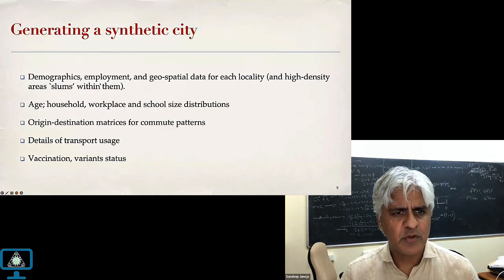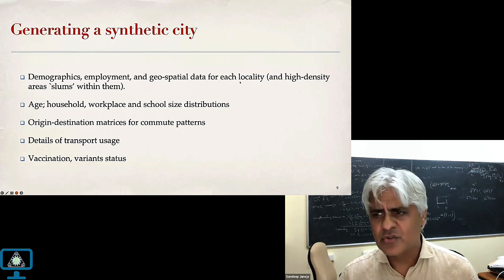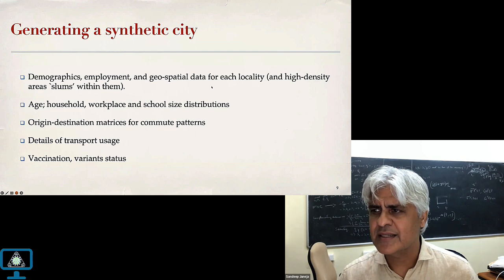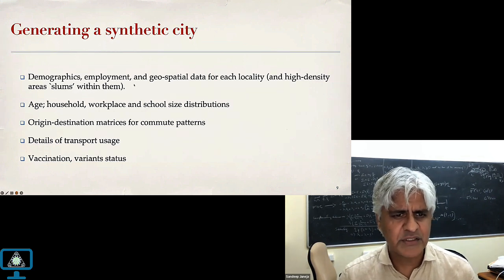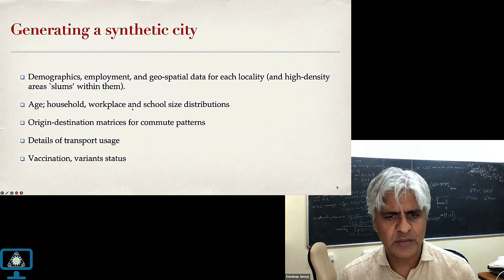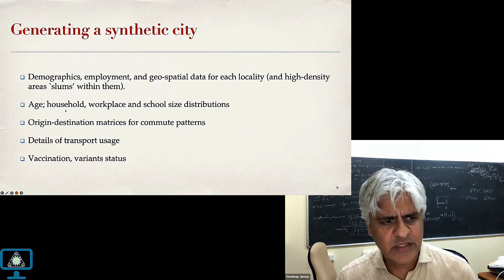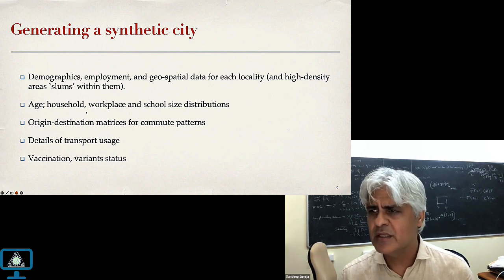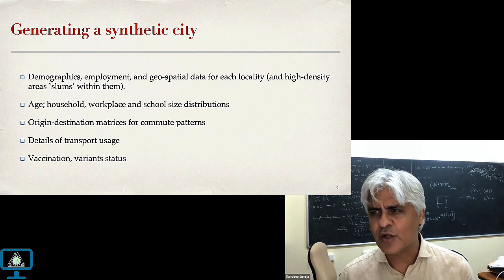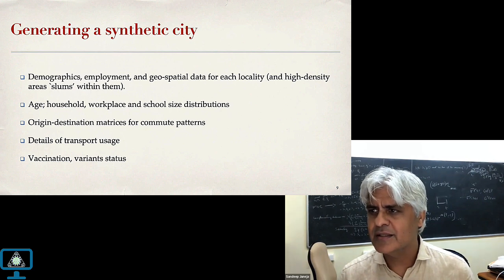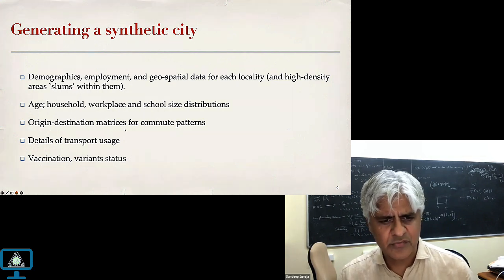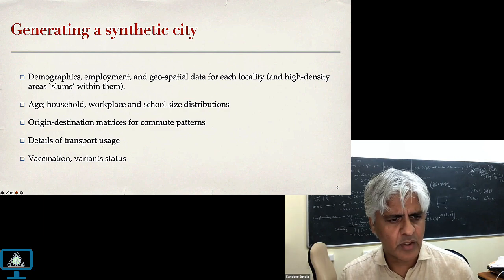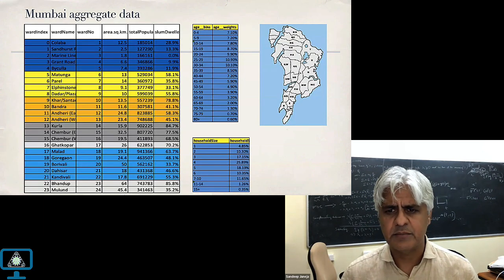Demographics, employment, and geospatial data for each locality were available from census data 2011. Mumbai's population has not changed much since then. Age, household, workplace, and school size distributions were used. We did a sero survey for Mumbai which gave us more data about age distribution, particularly in slums — population in slums is younger, which also explained that although they saw massive infection early on, severe health consequences were not as pronounced. We also had origin-destination matrices from earlier studies.